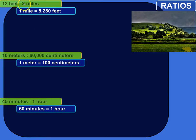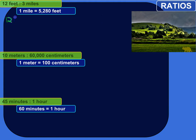We've got this ratio of 12 feet to 3 miles. That's not saying that 12 feet is equivalent to 3 miles — 3 miles is a bunch of feet. But a ratio is just a comparison. We're measuring something that happened to be 12 feet, we measure something else that happened to be 3 miles, and this ratio is just comparing the two. I'm going to rewrite it as a fraction — 12 feet to 3 miles.